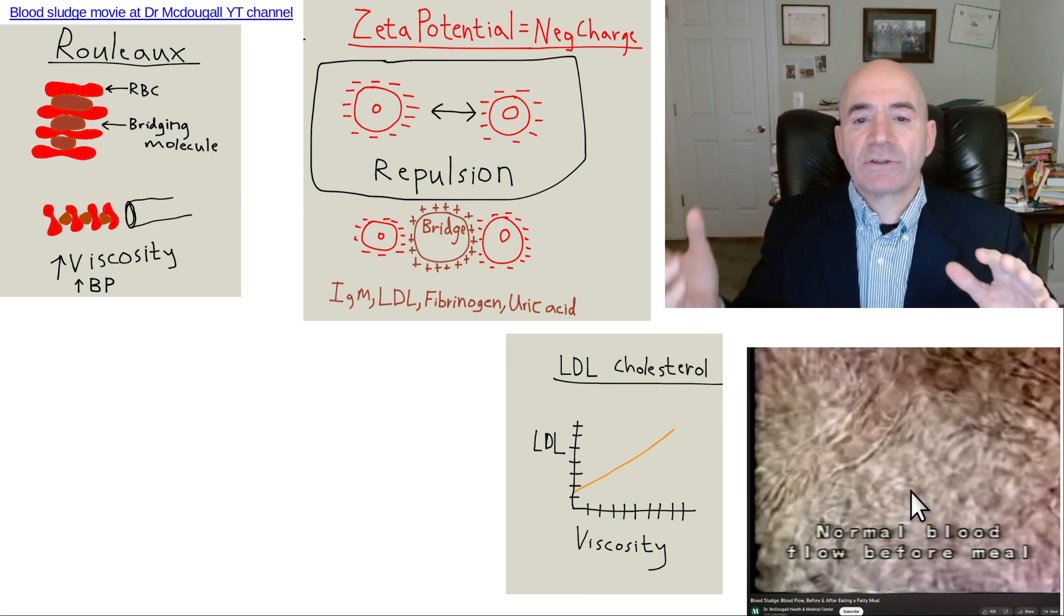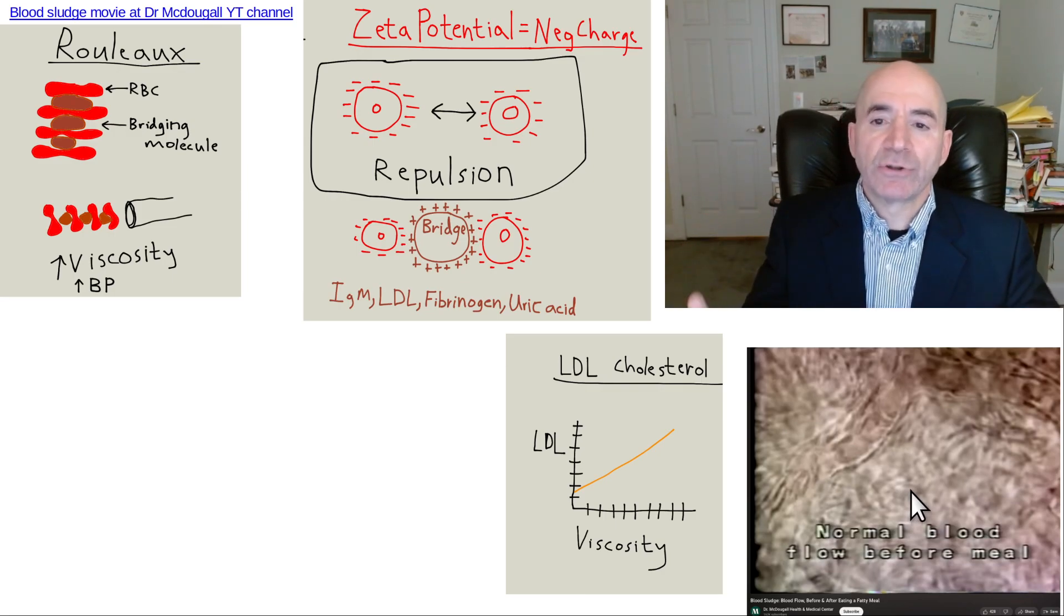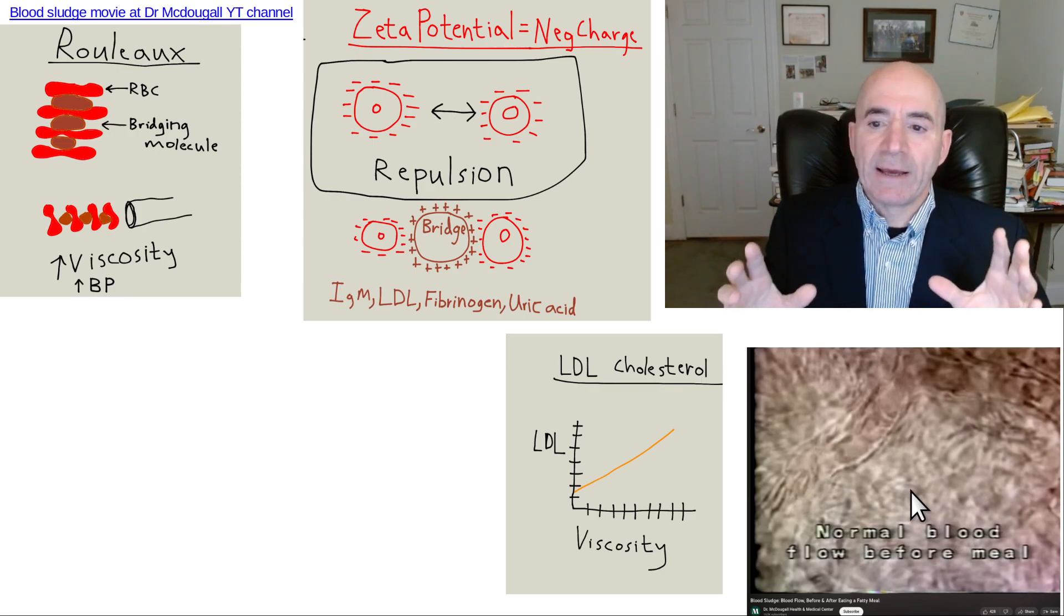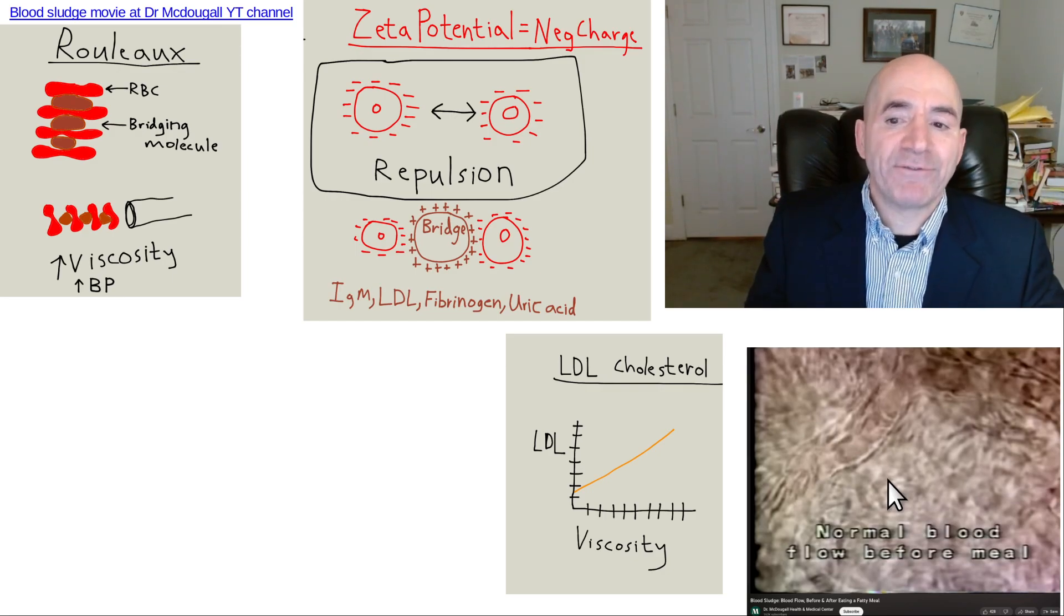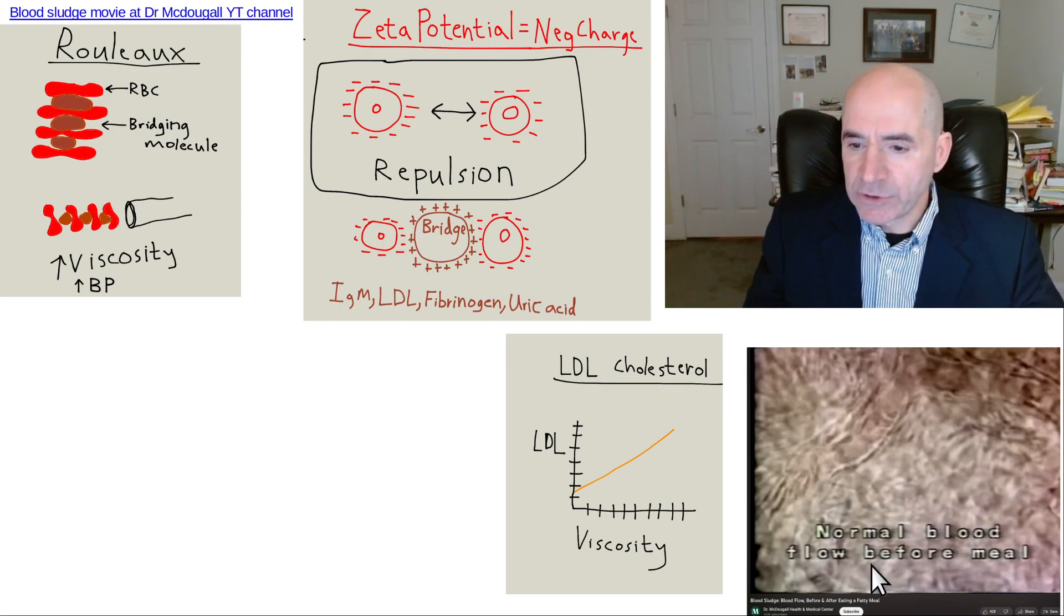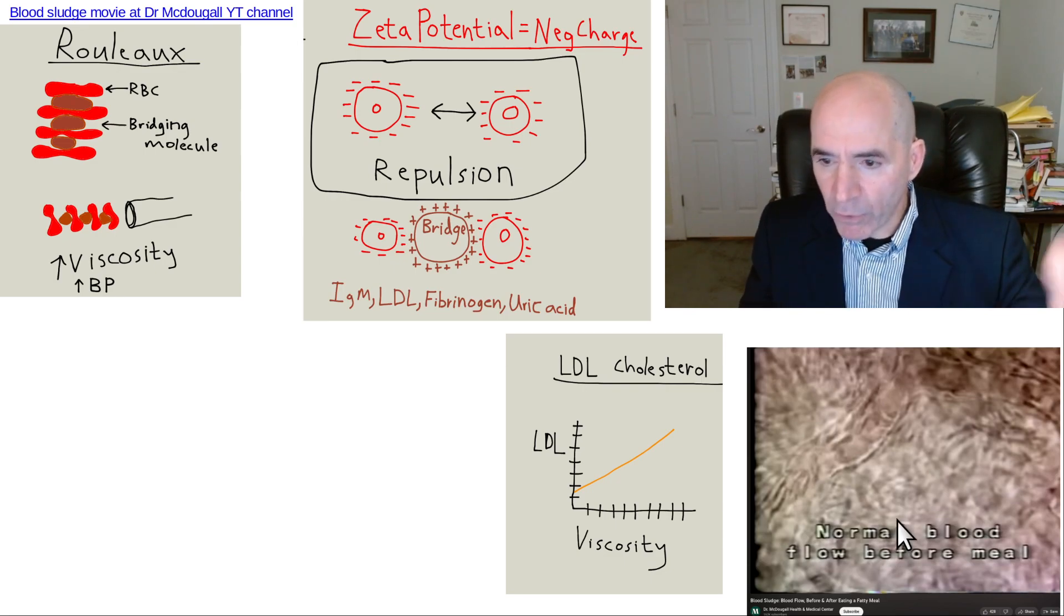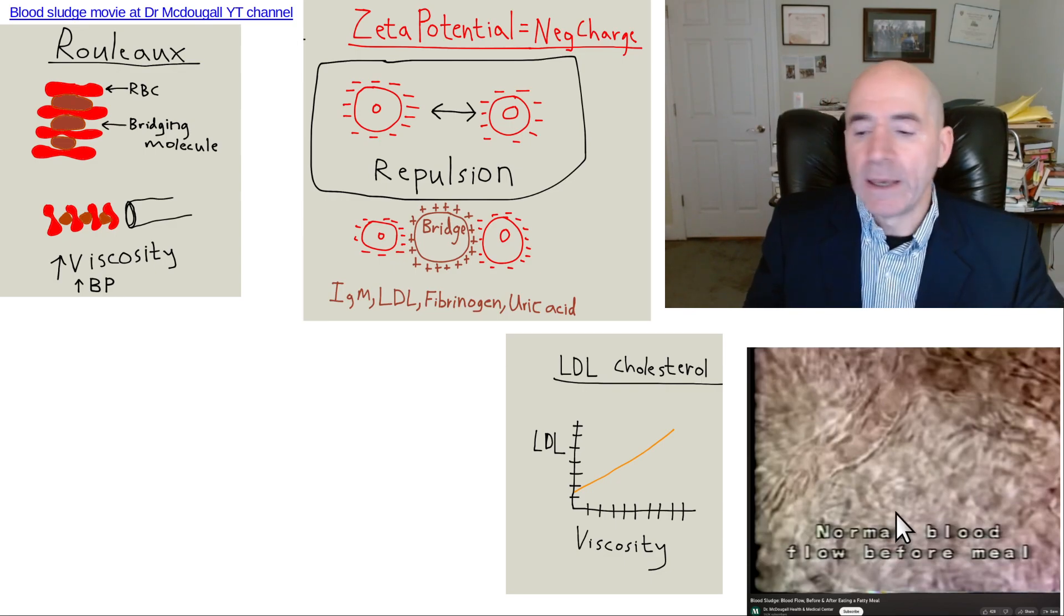I'm going to give my next talk, which is going to be a much longer lecture about hypertension, hypertension for beginners. And I think if you see this video first, everything will sort of come to life for you a lot faster. So, it's just called Blood Sludge before and after a high-fat meal, eating a fatty meal.